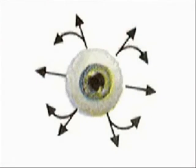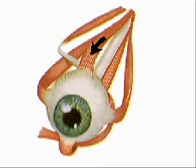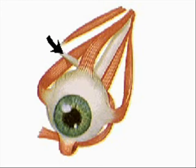The six external ocular muscles rotate the eyeball. The lateral rectus muscle moves the eyeball away from the midline of the body. The medial rectus moves it toward the midline. The superior rectus moves the eyeball upward, and the inferior rectus moves it downward. The superior oblique muscle moves the eye downward and outward, and the inferior oblique moves it upward and outward.